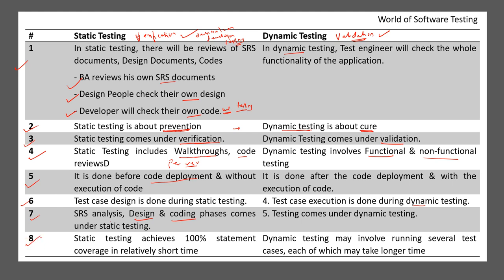The eighth difference: static testing achieves 100% statement coverage in a relatively short time, whereas dynamic testing may involve running several test cases each of which may take longer time. There are many test cases and scenarios the test engineer has to execute on the application, so dynamic testing takes longer than static testing where we are just reviewing documents - the SRS document, design documents, or code.